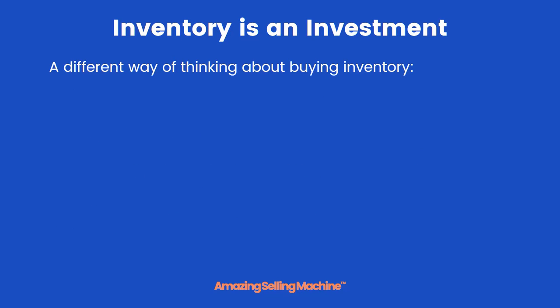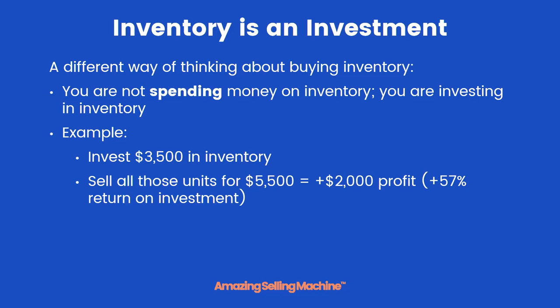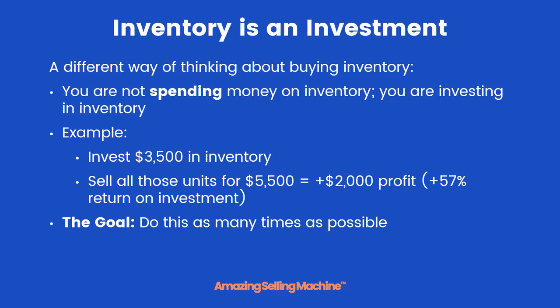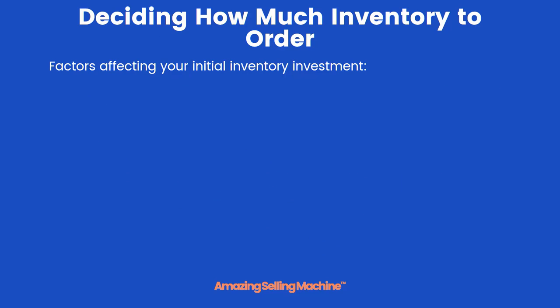Here's a different way of thinking about buying inventory: you're not spending money on inventory, you're investing in inventory. For example, if you invest $3,500 in inventory and sell all those units for $5,500, you get a $2,000 profit — a 57% return on your investment. The goal is to do this as many times as possible. At that rate, $100,000 spent in inventory would yield a $57,000 profit.